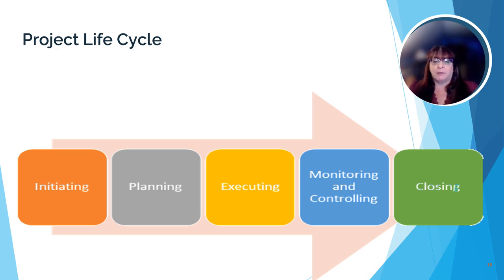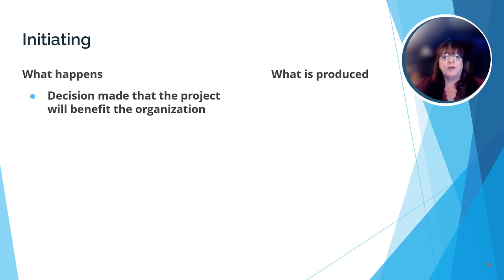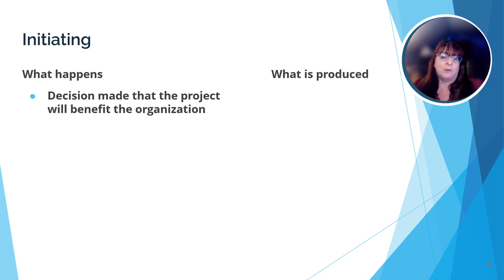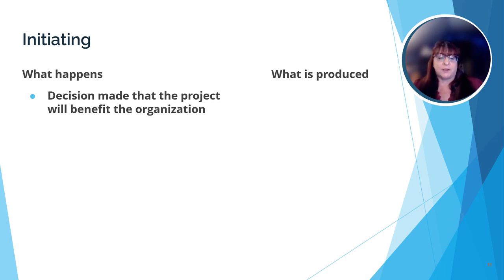Let's start with initiating because without initiating, we don't have a project. In Unit 1, we learned about the process of how a project begins. Someone thinks they have an idea that will generate some sort of benefit to the organization that fits within its strategic goals. Then someone — probably someone else — makes the decision that the project will benefit some aspect of the organization and the project is launched.